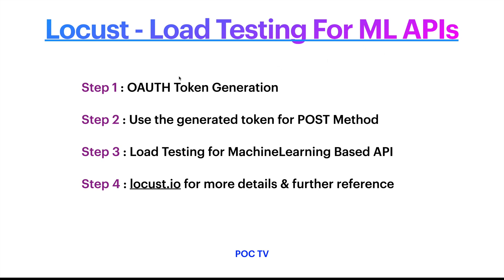As I promised earlier, we are going to see how to generate the OAuth token because in real life all the APIs have security. So we are going to see how to provide the token while accessing that API. Step two is to use the generated token for the POST method — we have one example with the POST method. And step three, we are going to see the load testing for the machine learning based API.